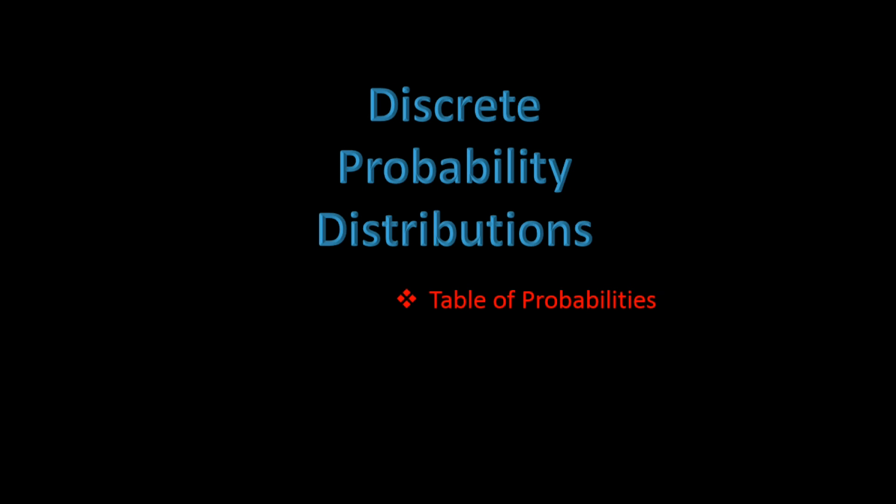Welcome to this tutorial on discrete probability distributions. Remember, a discrete variable is a variable that has a finite number of values with nothing in between. For example, the number of cars in the parking lot is either 1 or 2 or 3, but there can't be 1.3 cars in the parking lot. There are two types of discrete probability distributions we will talk about in this tutorial. The first type is a table with the probabilities associated with some random variable x, say the throwing of a die.